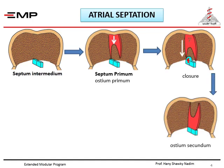During intrauterine life, the opening between the two atria has to persist — blood reaching the right atrium has to pass to the left atrium for the baby to survive. For that reason, while closure of the ostium primum is taking place, small holes appear in the upper part of the septum primum. As these small holes fuse together, a large opening appears, called ostium secundum. So we have ostium primum first and later ostium secundum, both in the same septum — the septum primum.